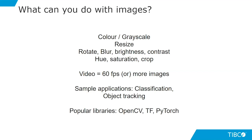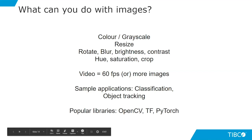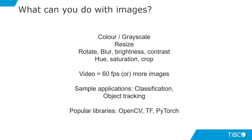Video is just a set of images — at 60 frames per second, it's 60 images per second. The same libraries used for images — OpenCV, TensorFlow, PyTorch — work for video too. OpenCV is preferred when you just want to process images without machine learning. For deep neural networks, TensorFlow is used throughout the entire process. Sample applications include image classification and object tracking.